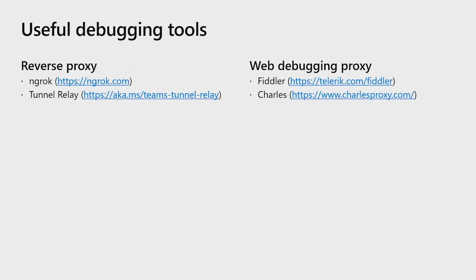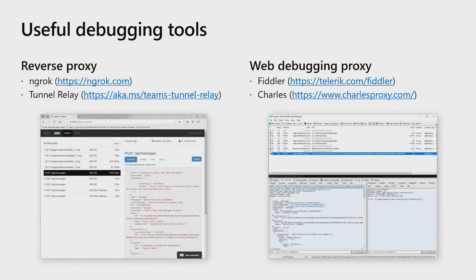Now let's talk a bit about debugging. When I develop apps for Teams, there are a few must-have tools that I find absolutely indispensable. First is the reverse proxy, so I can run bots and tabs locally. These are tools like Ngrok or the Tunnel Relay project that we published on our GitHub repo, and they let me debug my app inside Visual Studio or Visual Studio Code while it's running on my machine. You can debug your app while it's running on the cloud up in Azure, but it's faster to do it locally. Ngrok and Tunnel Relay also have nifty interfaces that show you the requests received by your app and your app's response.